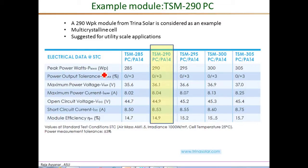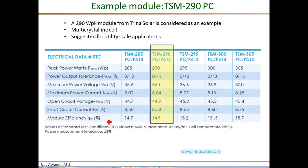The peak power is 290 watts, the voltage at maximum power point VMP is 36.04 V, the open circuit voltage VOC is 44.9 volts, and the short circuit current ISC is 8.53 amperes. All of these are given under STC — standard test conditions — at AM 1.5, irradiance of 1000 W/m², and a cell temperature of 25°C.